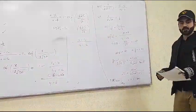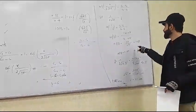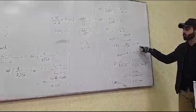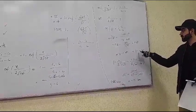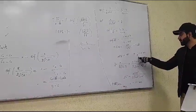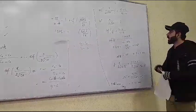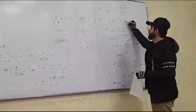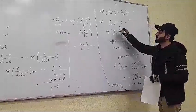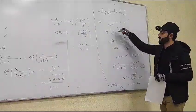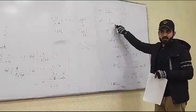From the error function table, the value corresponding to erf(z) = 0.421 gives z = 0.40. Now, using the equation z = x / (2√(Dt)), we want to calculate the value of t.